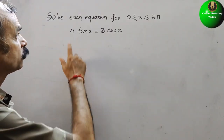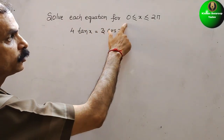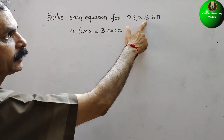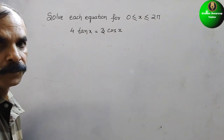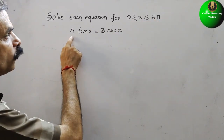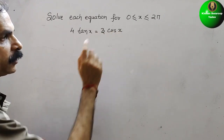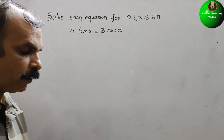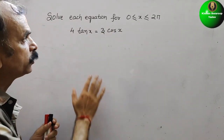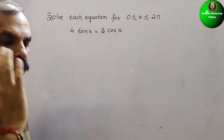The question is: solve each equation for 0 ≤ x ≤ 2π. What they have given is 4tan(x) = 3cos(x). First, what we will do is try to change tan(x) into sin and cos.